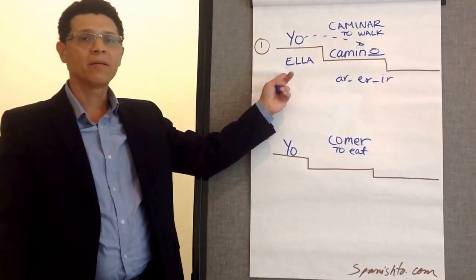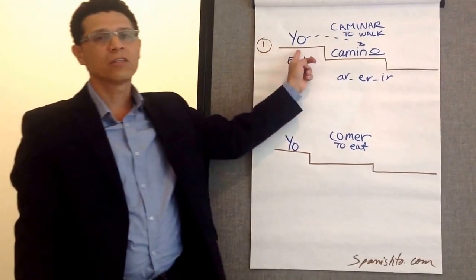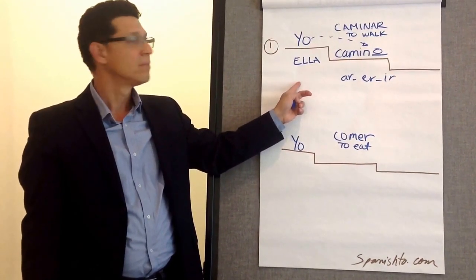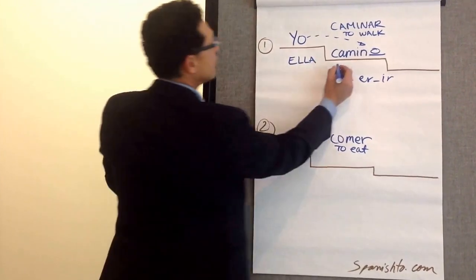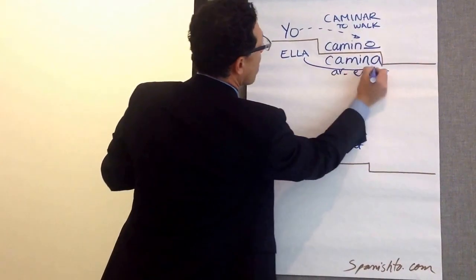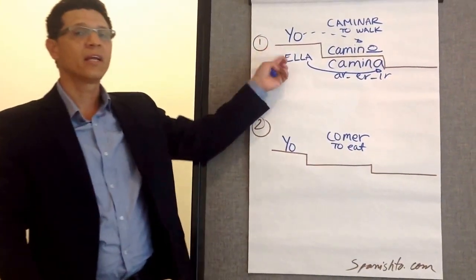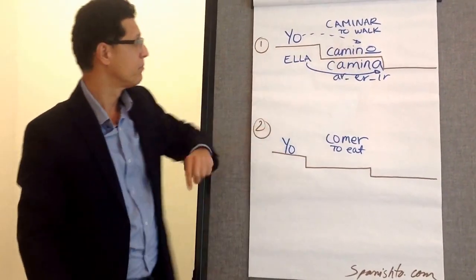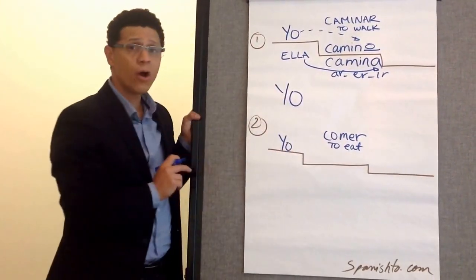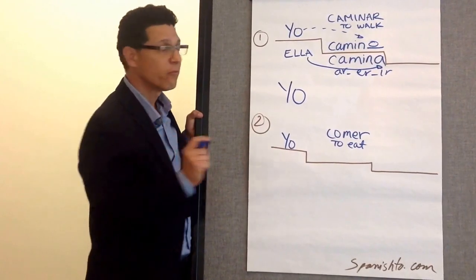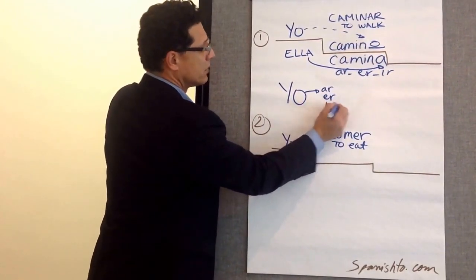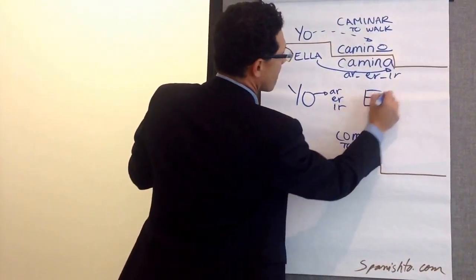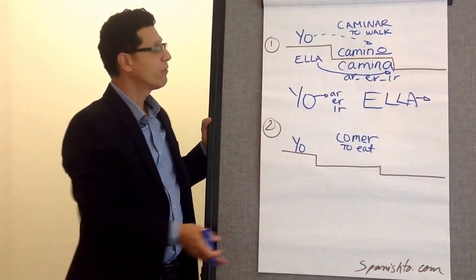Now we have a new subject: ella, she. According to the logic that we were doing before with yo, we can deduce that the ending now is going to be A. You can actually figure out what endings go at the end of the verb. Yo always ends in O for all the different verbs. Ella ends in A for the A-R verbs.